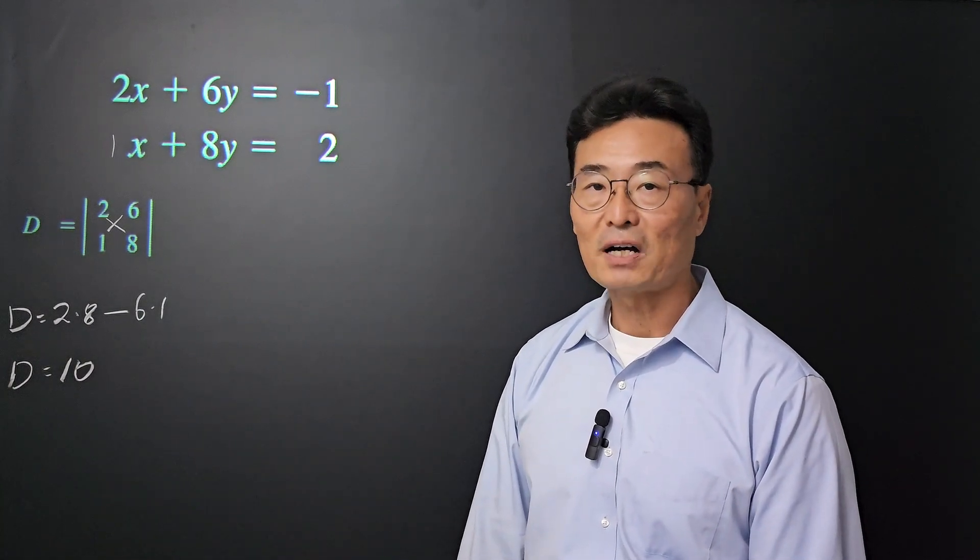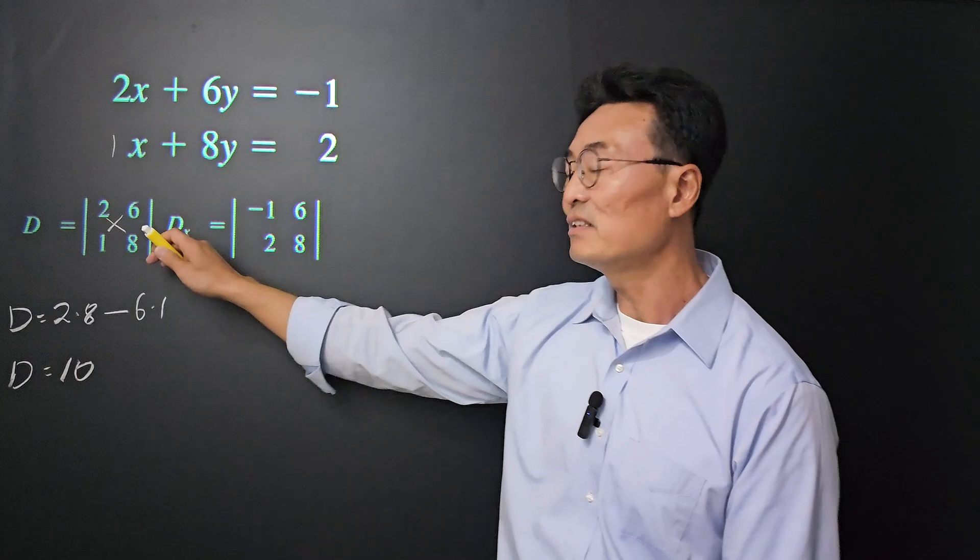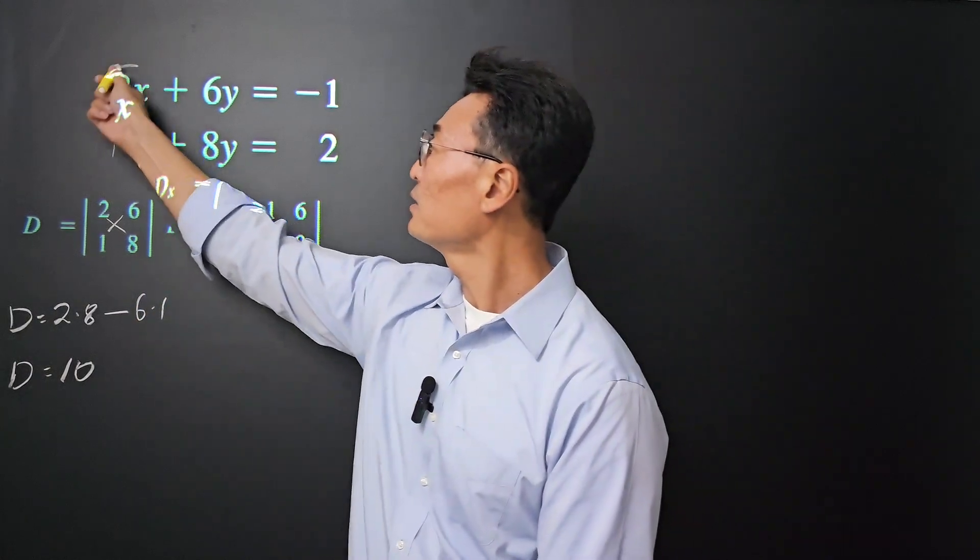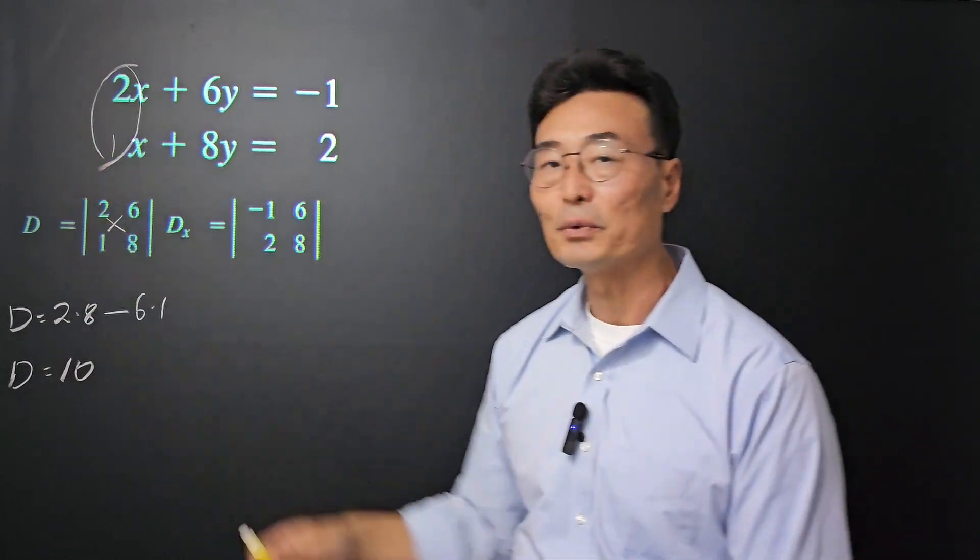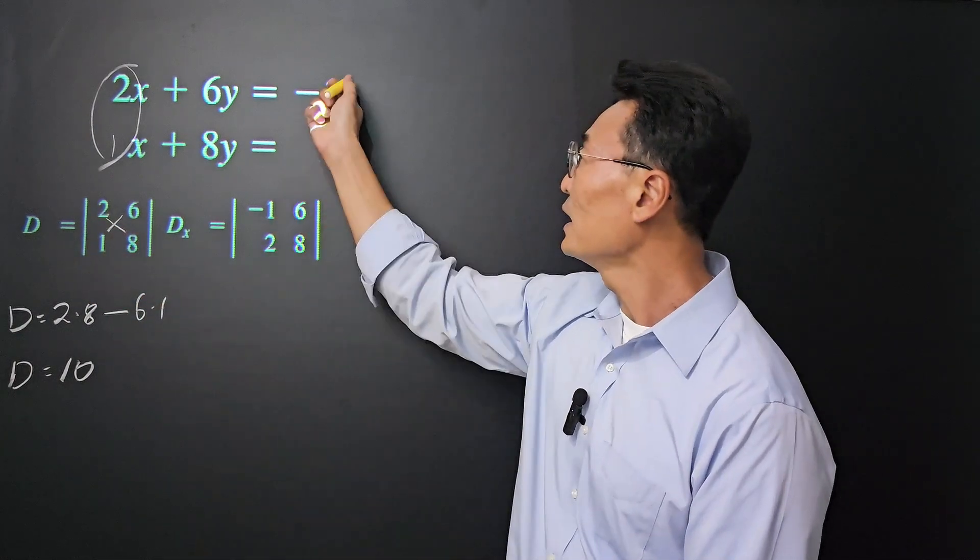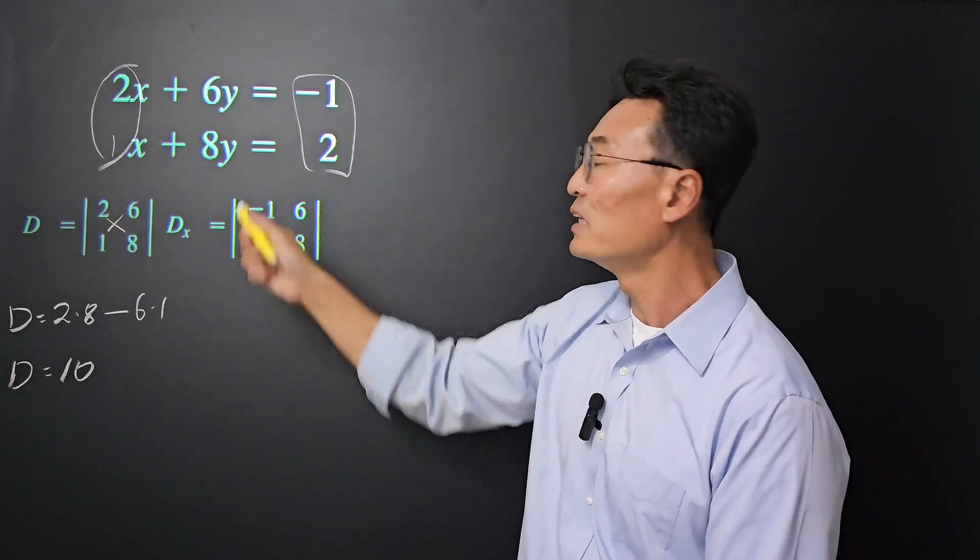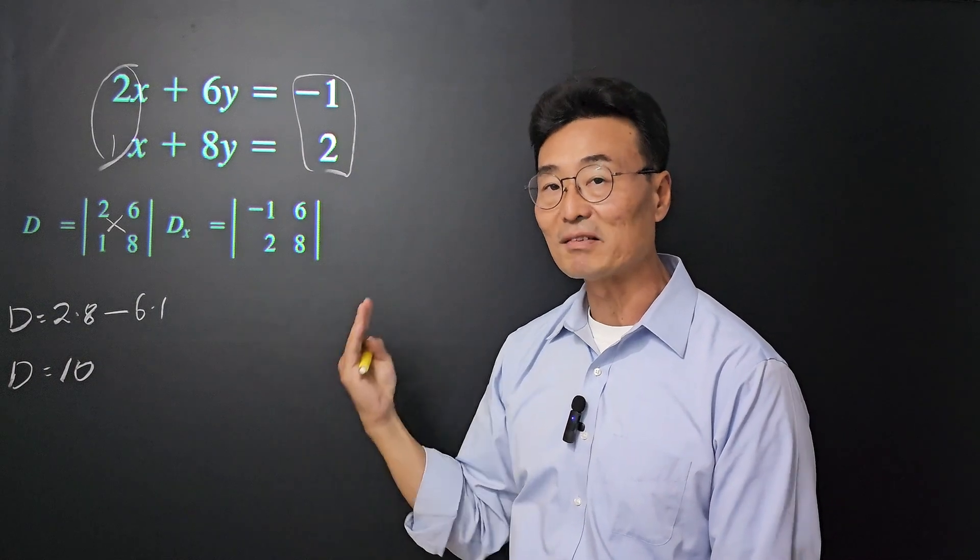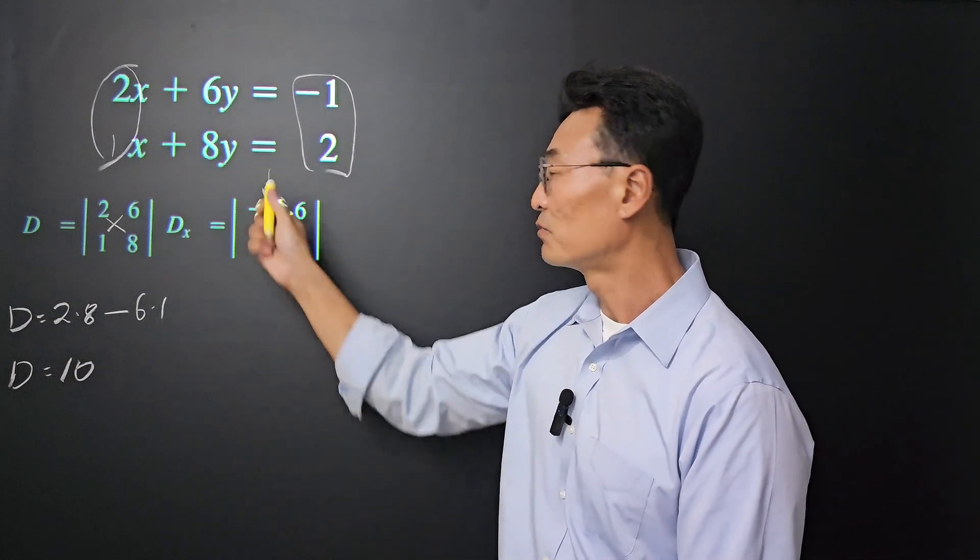Next, we need to find Dx. What Dx is, is we take the 2 and the 1, remove them from the first column, and replace them with the negative 1 and the 2 from the right side of the equal sign in the first column.